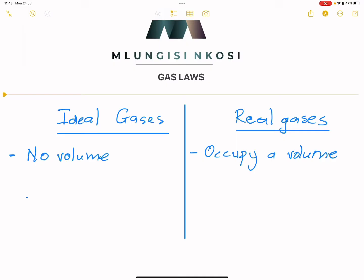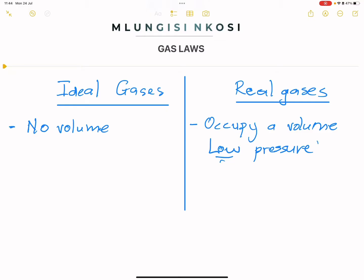How can we get a real gas to behave like an ideal gas? What we need is for the volume to be as big as possible, meaning the gas needs to be at low pressure. At low pressure, it really doesn't matter how big the molecules are — the molecules would be as far away as possible from each other and would not exert any forces on each other. So a real gas would behave more like an ideal gas at low pressure. Low pressure means that the volume is high, so it's a large container, and the gas would behave more ideally.